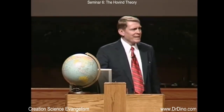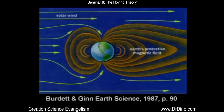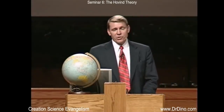Next thing to keep in mind: the Earth has a very strong magnetic field, but it's getting weaker. At the time of the flood, it was probably about 15 to 20 times stronger than it is today. The magnetic field would deflect super cold ice crystals to the poles, most of them. Also, super cold ice is easily statically charged.